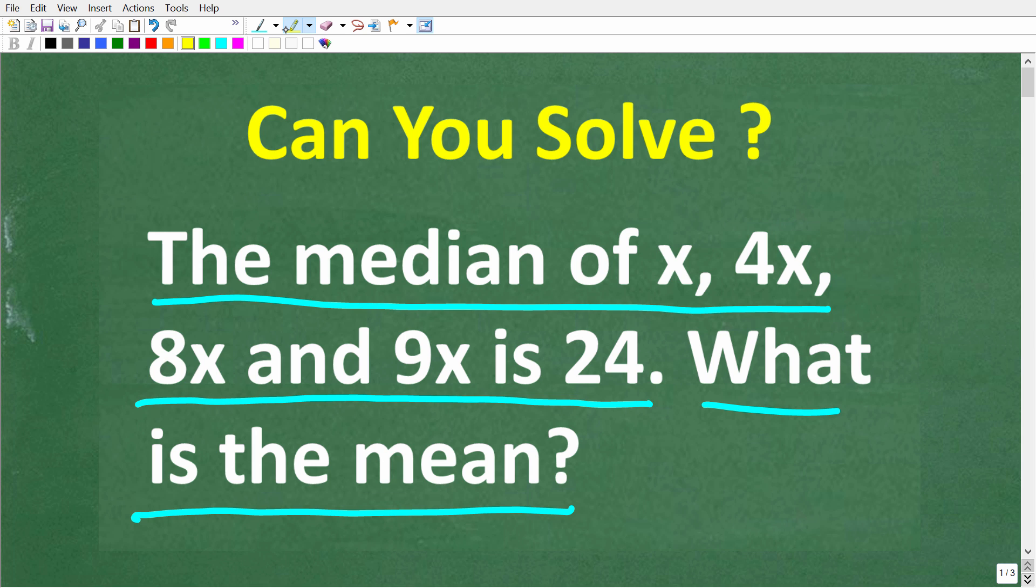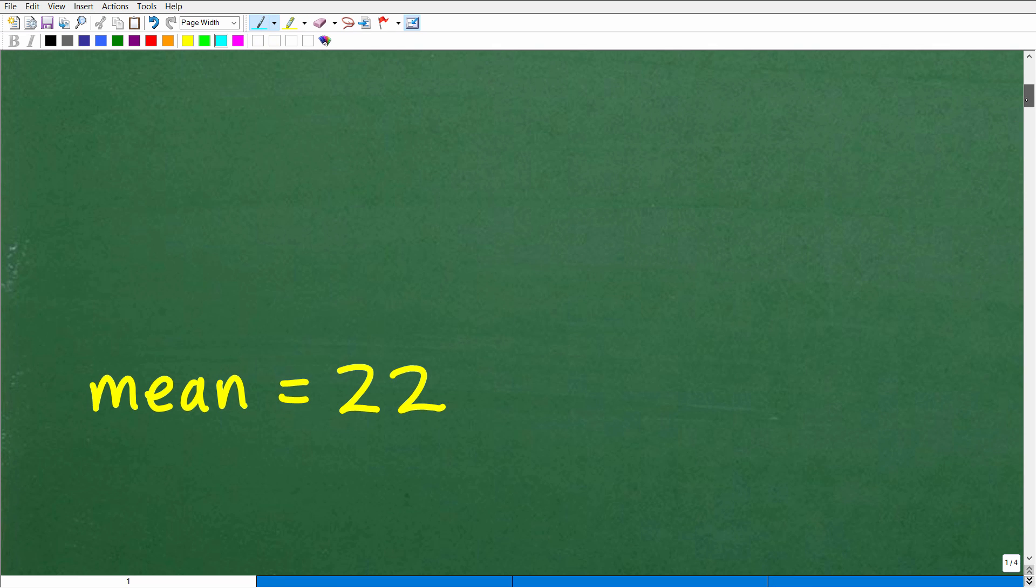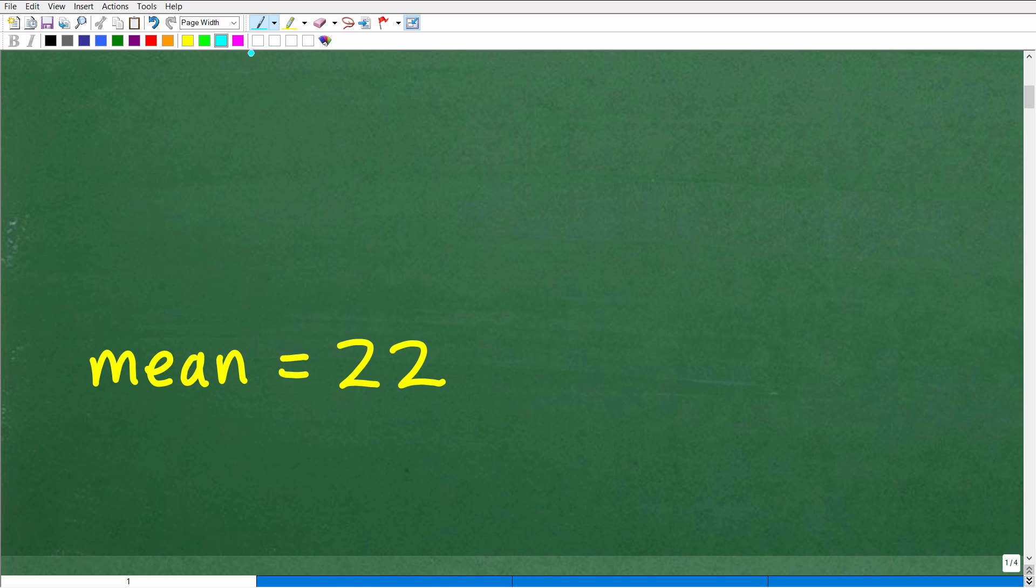But if you think you know the answer, put that into the comment section. I'm going to show you the correct answer in just one second, then of course I'm going to solve this problem step by step. One more time, the median of x, 4x, 8x, and 9x is 24. What is the mean? Let's go ahead and take a look at the answer right now.